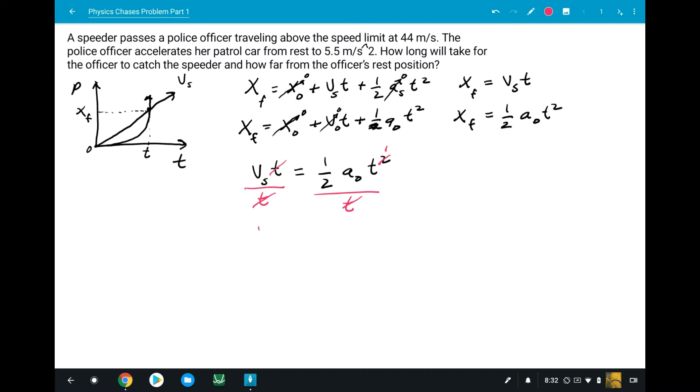So the speeder velocity is now equal to 1/2*ao*t. Well, let's solve for the time. Time is going to equal two times the velocity of the speeder over the officer's acceleration. Let's plug in some values. So 44 meters per second divided by 5.5 meters per second squared. That's going to give us 16 seconds. So it's going to take 16 seconds for the officer to catch up.